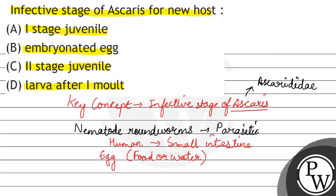Infective stage of Ascaris for new host is second stage juvenile. So, C is the correct answer. I hope you understood the question well. Best of luck.